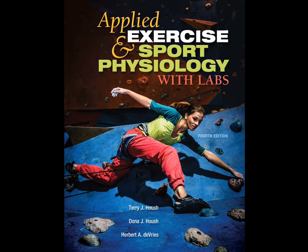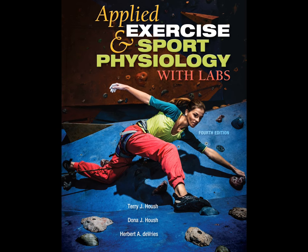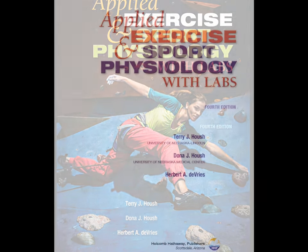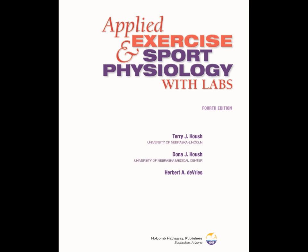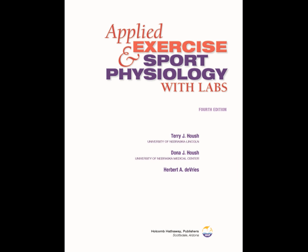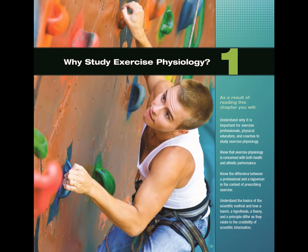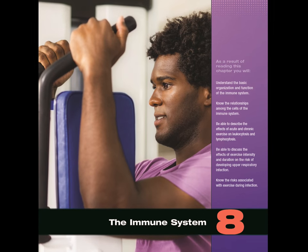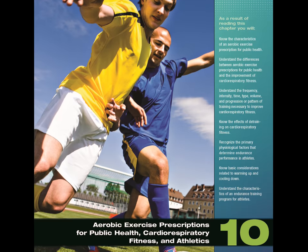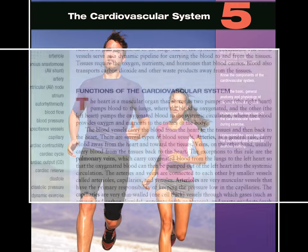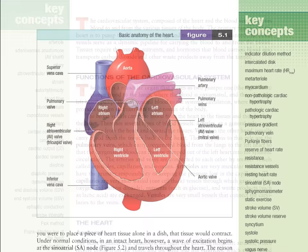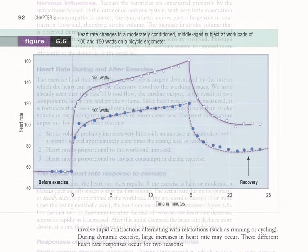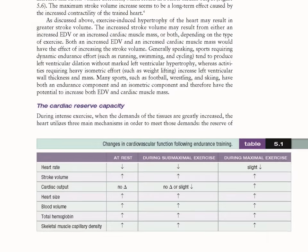Now in its fourth edition, Applied Exercise and Sport Physiology is an ideal text for students seeking a scientific foundation as well as practical information as they prepare for their future careers. This book provides a basic introduction to the principles of exercise and sport physiology. It is intended for entry-level courses and can provide the groundwork for more advanced courses. With an optimum balance of research and application, this book offers students an essential introduction to the body's physiological systems and how they are affected by exercise.